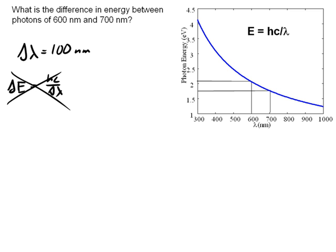Essentially what you have to do is you have to calculate the energy at 600 nanometers and the energy at 700 nanometers and subtract them. So the real energy difference, delta E, is going to be equal to hc over 600 nanometers, realizing that's higher, minus hc over 700 nanometers.